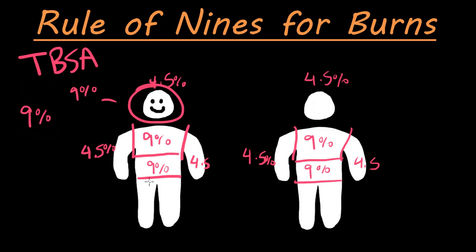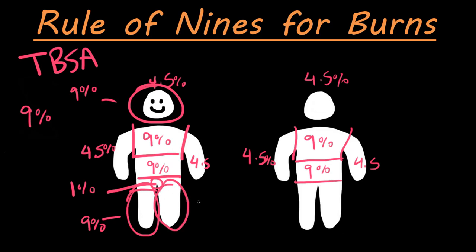We have this special area — the perineum — which is just going to be 1%. It's a really small area compared to the rest, so the entire perineum is just 1%. And then the entire anterior right leg is going to be 9% by itself — it has a lot more surface area compared to the hands or the arms. The same thing with the left side, 9%. And then the back side for both legs gets 9% as well.